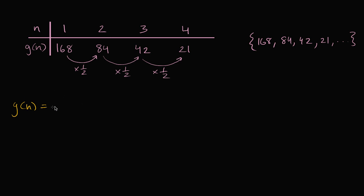Well one way to think about it is we start at 168, and then we're gonna multiply by 1 half a certain number of times. So we could view the exponent as the number of times we multiply by 1 half.